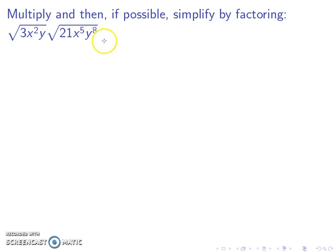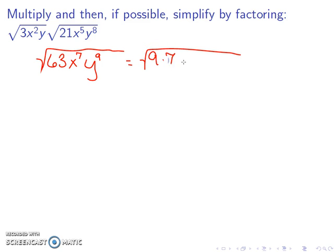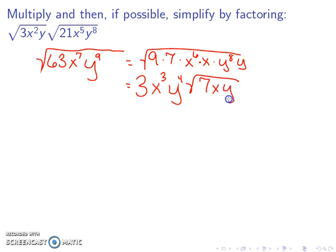Let's multiply and then, if possible, simplify. So square roots can be broken up under multiplication, which means this is the same thing as 3 times 21, which is 63, x squared times x to the 5th, we add exponents, 2 plus 5 is 7, and with y, I have 1 plus 8 is 9. And then we're going to rewrite this. 63 is 9 times 7. x to the 7th is x to the 6th times x. y to the 9th is y to the 8th times y. We know the square root of 9 is 3. The square root of x to the 6th is x cubed. And the square root of y to the 8th is y to the 4th. We still have a 7, an x, and a y underneath the square root.